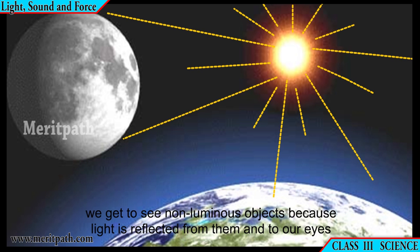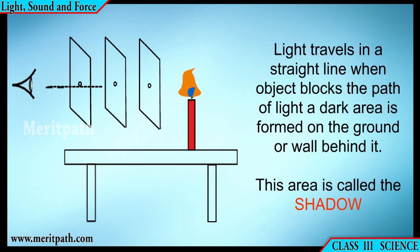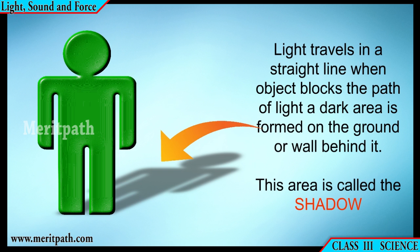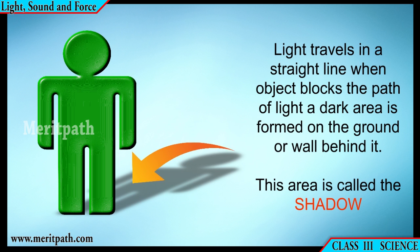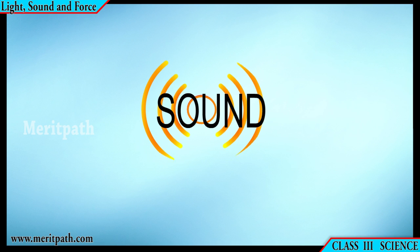Shadow: light travels in a straight line. When an object blocks the path of light, a dark area is formed either on the ground or on the wall. This area is called a shadow.